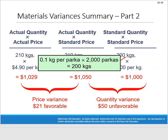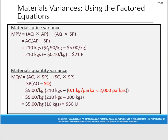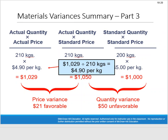The book shows some of the math: 200 kilograms = 0.1 kg per parka × 2,000 parkas. The $4.90 per kilogram is backed into by dividing $1,029 by 210 kilograms. The book also presents an equation method with multiple variables, which I think overcomplicated things. I prefer the three-prong approach — it's more effective and gives a better understanding of what you're doing. I'll use that format throughout the chapter.